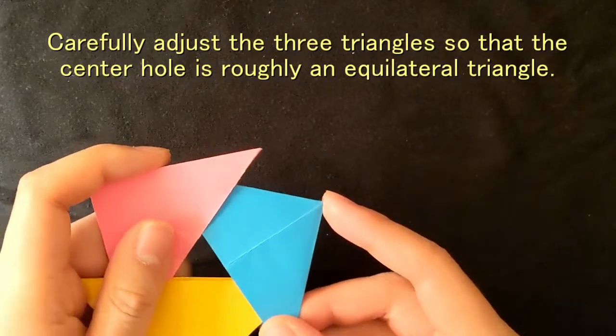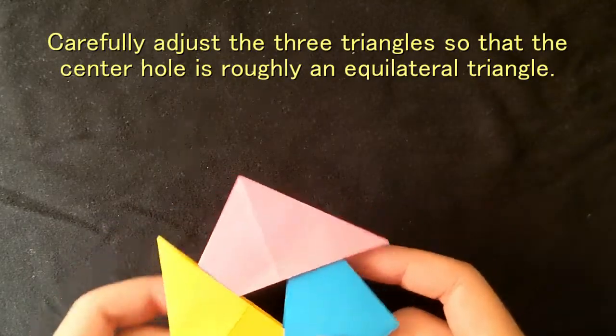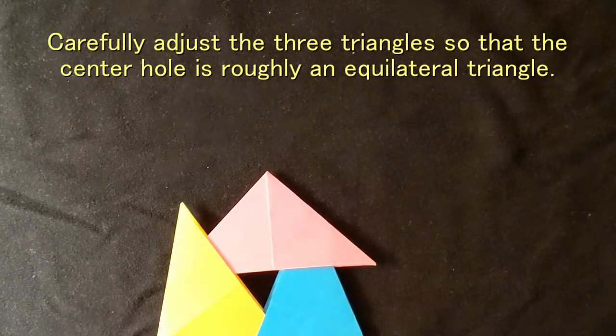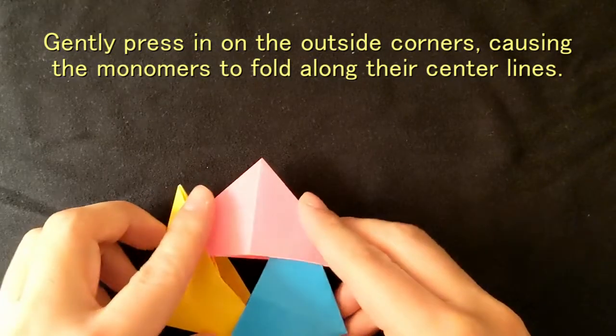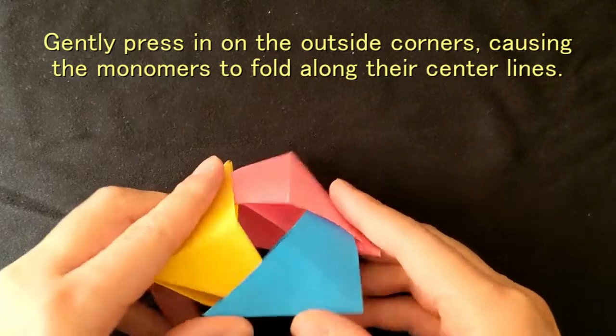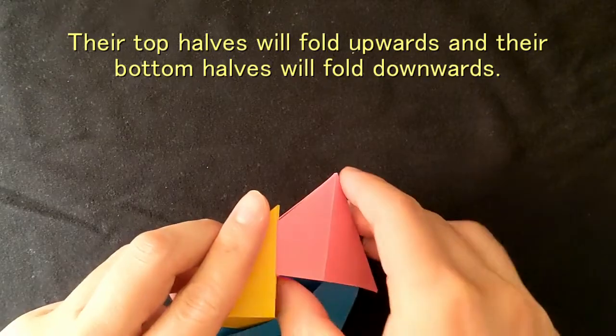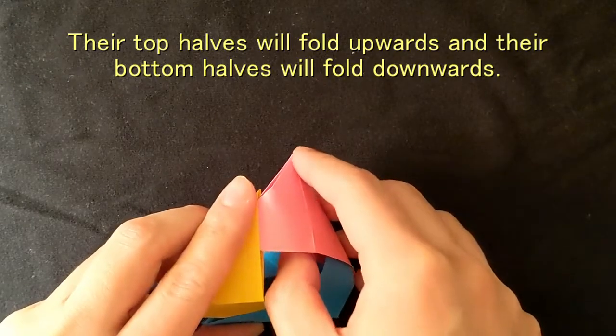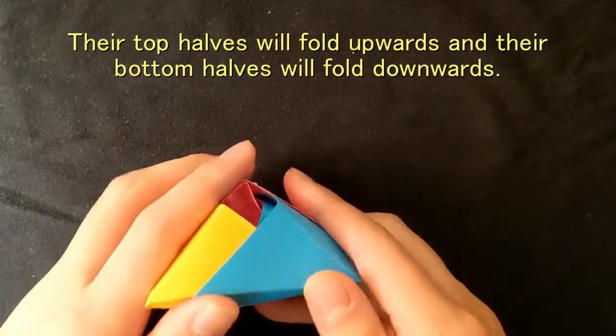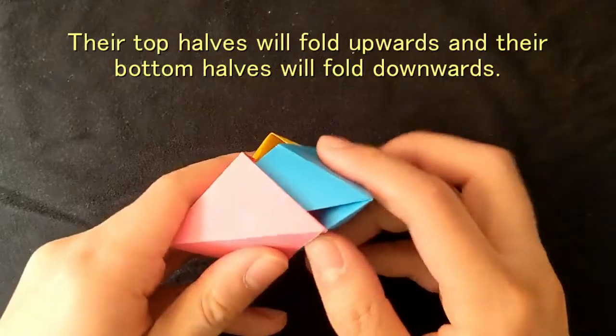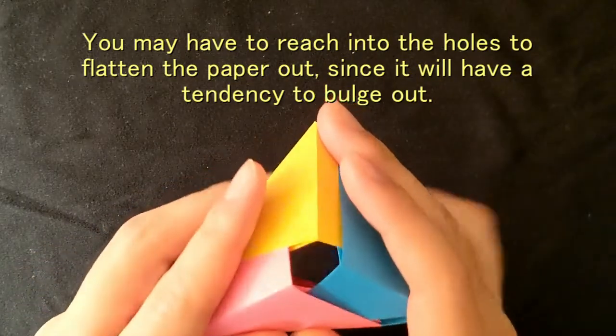Carefully adjust the three triangles so that the center hole is roughly an equilateral triangle. Gently press in on the outside corners, causing the monomers to fold along their center lines. Their top halves will fold upwards, and their bottom halves will fold downwards. You may have to reach into the holes to flatten the paper out, since it will have a tendency to bulge out.